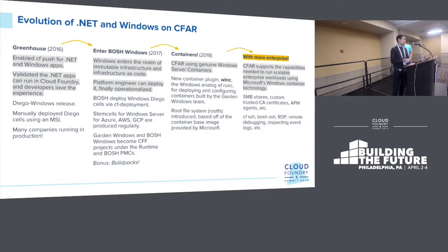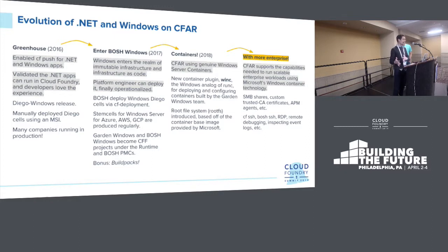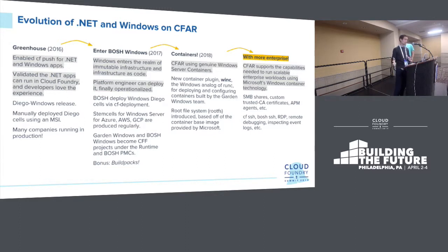Bosch Windows is really when Windows entered the realm of immutable infrastructure and infrastructure as code. In enterprises, Windows typically deployed either bare metal or in a VM and quickly turns into a pet, then a snowflake. Bosch managing Windows VMs — treating them like cattle, destroying a Windows VM when it becomes unhealthy automatically and resurrecting it — is a totally new way of thinking about managing a fleet of Windows servers. A platform engineer could deploy, operationalize, and automate that lifecycle in fundamental ways.